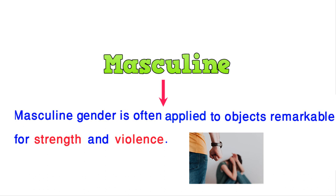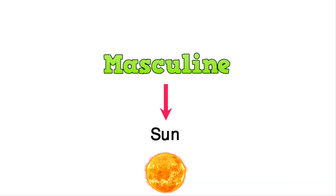If we talk about the sun, the sun gives heat, which comes in a negative category. Because I have told you the definition of masculine gender — that which creates strength and violence — we will add 'sun' to the masculine gender category.